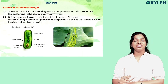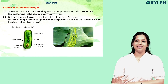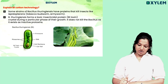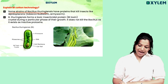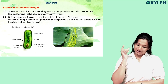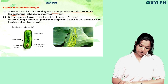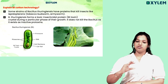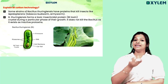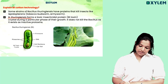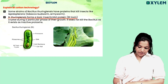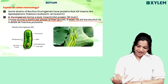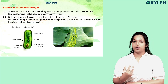Explain BT cotton technology. Some strains of Bacillus thuringiensis are bacteria that produce proteins that kill insects like Lepidopterans, tobacco budworm, and armyworm. Bacillus thuringiensis forms a toxic insecticidal protein — BT toxin crystal — during a particular phase of their growth. It does not kill the bacillus as it exists as an inactive protoxin.